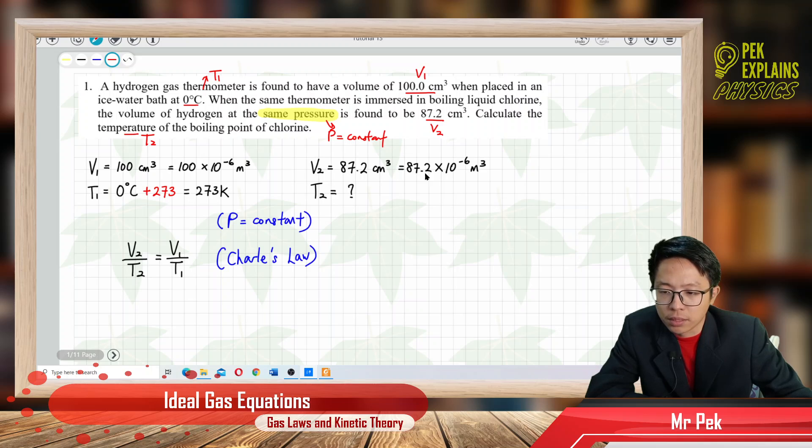For degrees Celsius, in this chapter remember all the temperature you have to convert to Kelvin. We must always use the absolute temperature. In this chapter, always change to Kelvin.